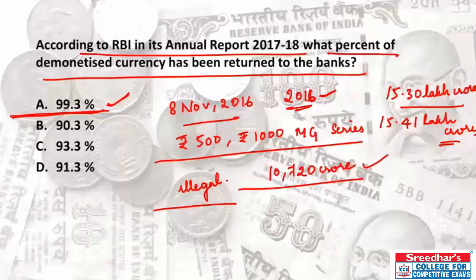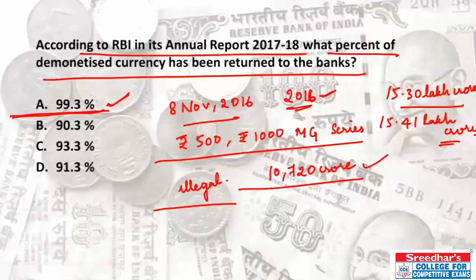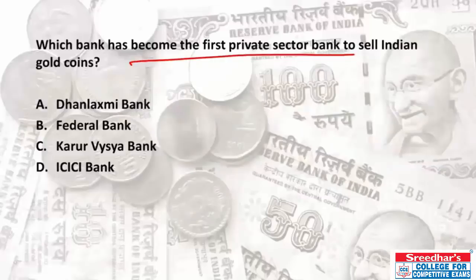Bank notes not deposited back were worth only around 10,720 crore rupees, leading analysts to state that the effort failed to remove black money from the economy. Initially the move received support from several bankers and international commentators, but was also criticized as poorly planned and unfair, and was met with protest, litigation, and strikes against the government.